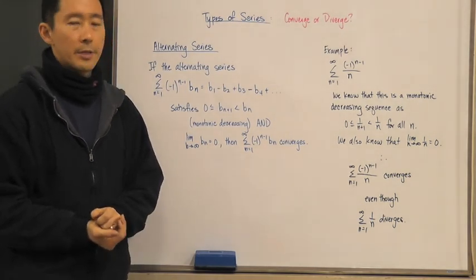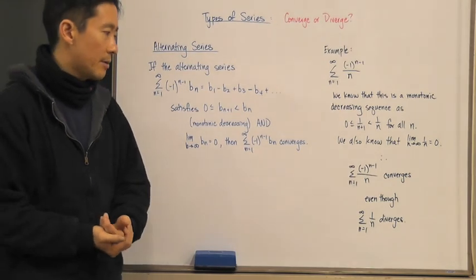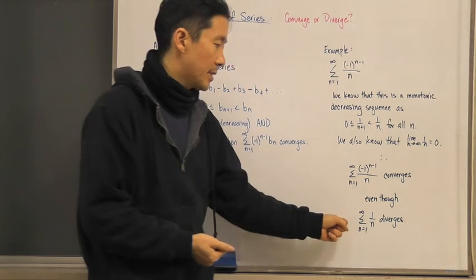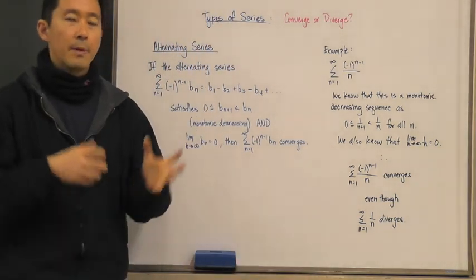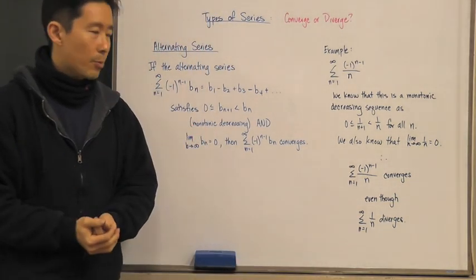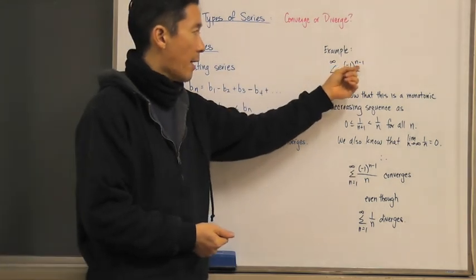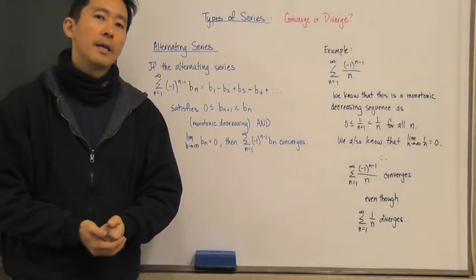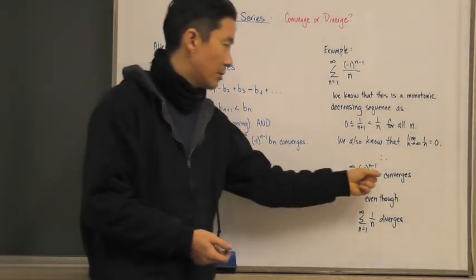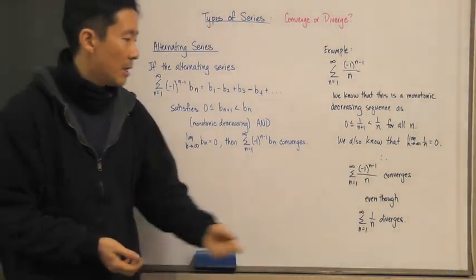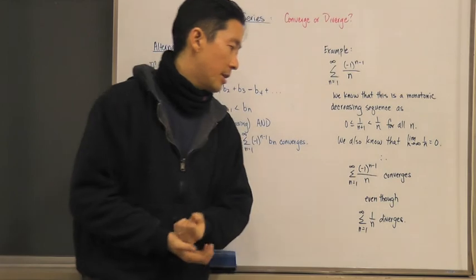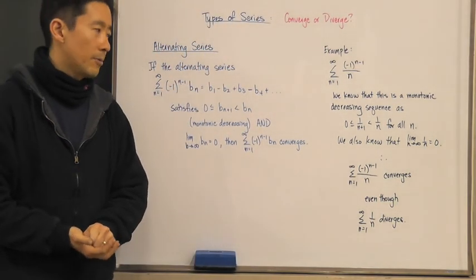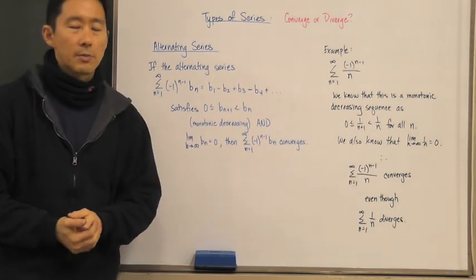The reason I wanted to look at this in particular is that the harmonic series diverges on its own, but once we incorporate the negative one factor — making it an alternating series — this particular alternating series converges, whereas the non-alternating harmonic series diverges.